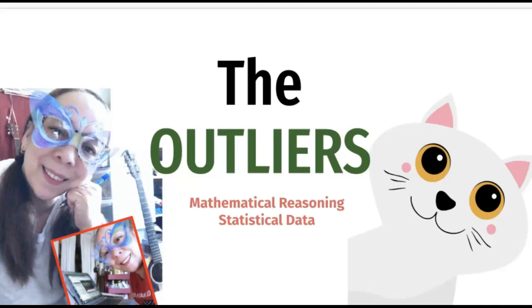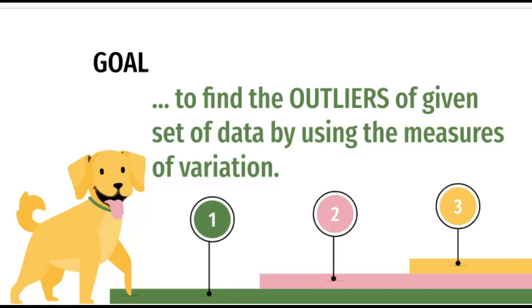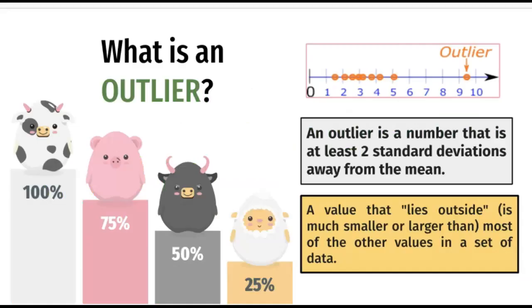Good morning everyone, we'll be working on outliers today in mathematical reasoning on statistical data. The goal is to find outliers of a given set of data by using the measures of variation. So what is an outlier? An outlier is a number that is too far away from the set.